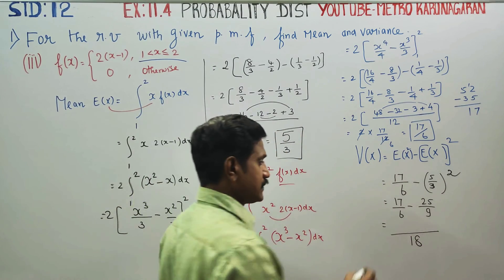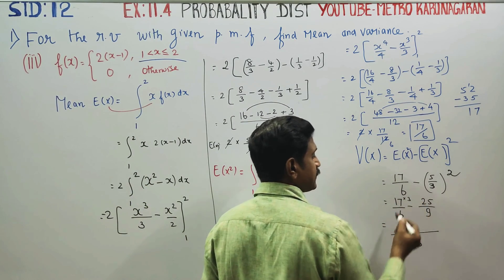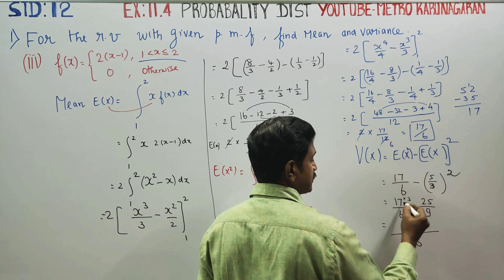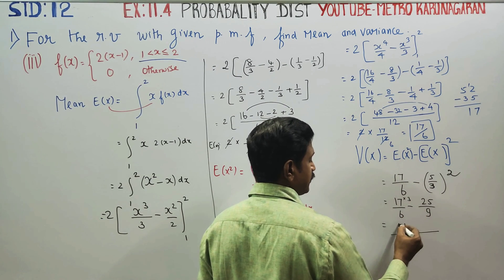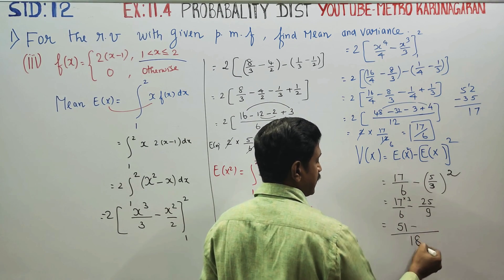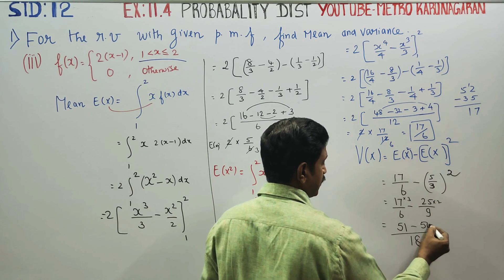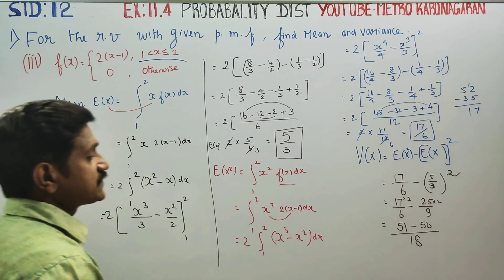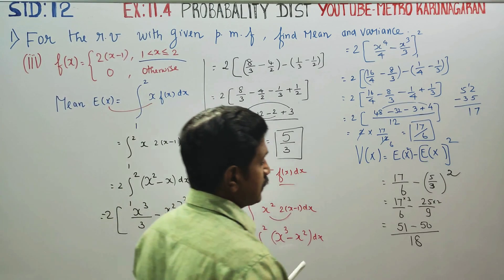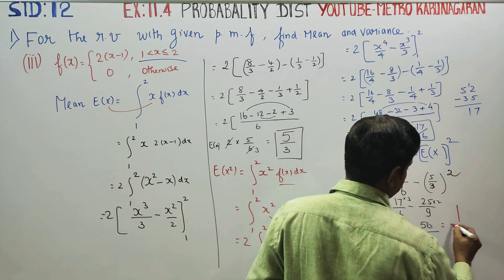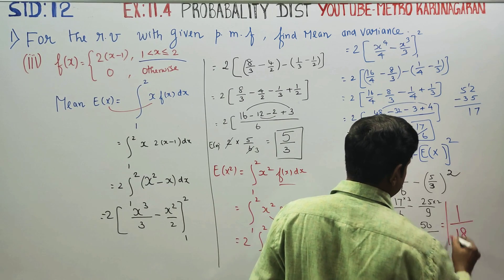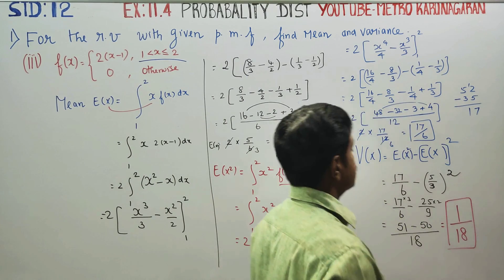3 times gives 51, 2 times gives 50. You get 51 minus 50, which becomes 1 by 18. Therefore your final answer is 1 by 18. This is your variance.